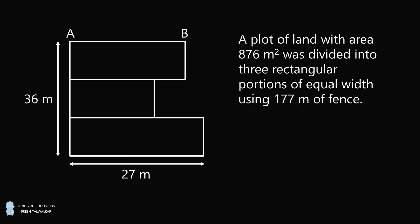There are two parts to the question. Part A, find the length of AB. Part B, find the perimeter of the plot of land.